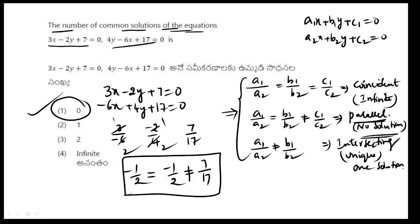To summarize: identify the values A1, B1, C1, A2, B2, C2 from the given equations. Then calculate A1 by A2, B1 by B2, and C1 by C2. Based on those ratios, determine whether the lines are parallel, coincident, or intersecting, and find the number of solutions accordingly — this is straightforward to calculate.